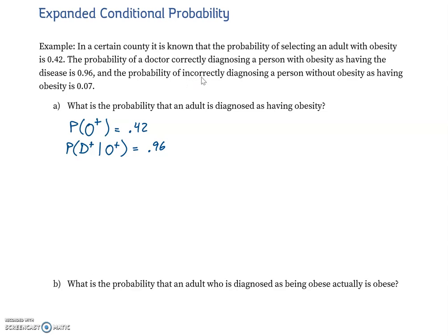The probability of incorrectly diagnosing a person without obesity as having obesity — given that the person is not obese, O− — and diagnosing them as positive for obesity, D+, given O−, is 0.07.